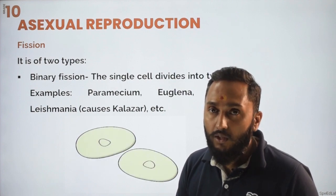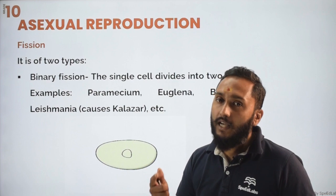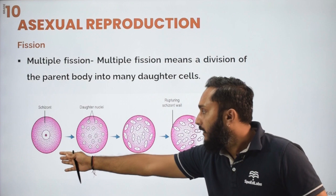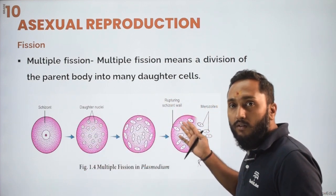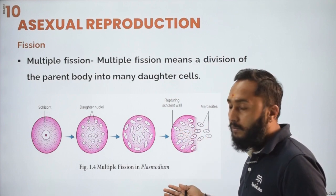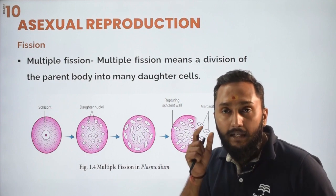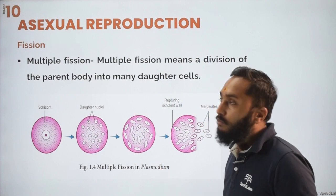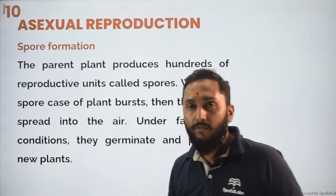In binary fission, one single organism will first divide its nucleus — that means karyokinesis is performed — and after that, cytokinesis takes place. In multiple fission, one single organism divides into more than two organisms or daughter cells. Such type of fission is known as multiple fission, which can be easily found in Plasmodium.